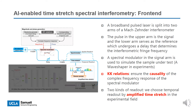Here, we propose AI-enabled time-stretch spectral interferometry. In the front end, there is a Mach-Zehnder interferometer for spectral interferometry, which is the same as the previous setup. In the upper arm, a spectral modulator is used to simulate the sample under test. For each complex frequency response of the spectral modulator, the magnitude and phase frequency responses are subject to Kramers-Kronig relations to ensure causality. In experiments, these complex profiles are modulated onto the laser spectrum using a waveform shaper. The interferometer pattern can be measured using either a spatial readout with a grating spectrometer or by temporal readout using a time-stretch spectrometer, which maps the spectrum into a temporal signal with a time scale slow enough for acquisition with a real-time digitizer.